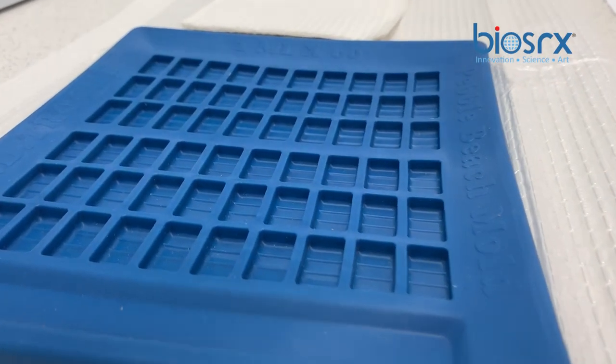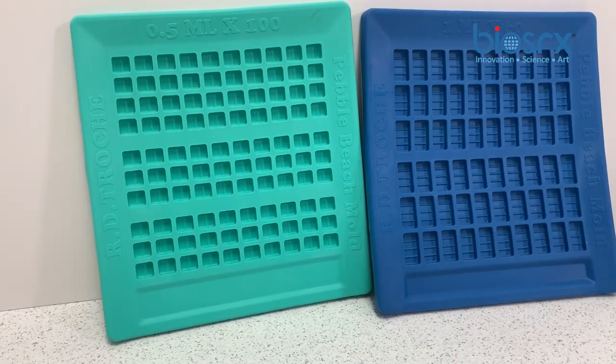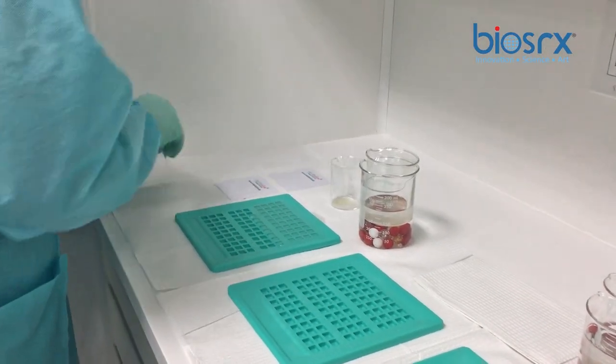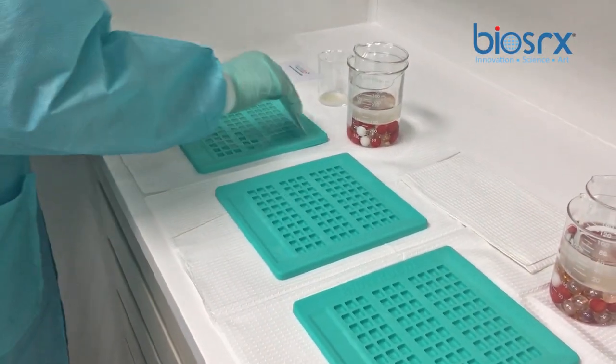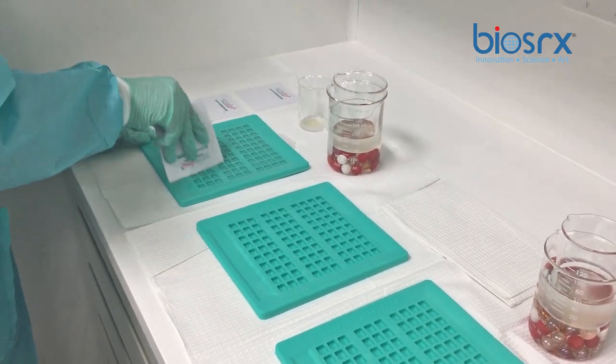This property allows us to compound medications of up to 250 degrees Fahrenheit, something other trochee molds cannot do. Because of the high heat resistance and design of the segmented cavities, these trochee molds allow us to make 30, 60, or even 100 trochees at a time.